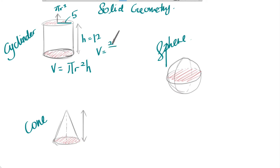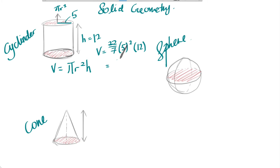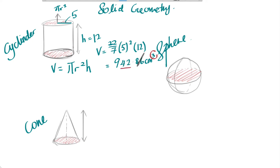Pi is usually given as 22 over 7, then r is 5 squared, and h is 12. Calculate it with your calculator and you'll get 942.86 cm³. Remember to put the cube unit — it is very important, or else they will not accept your answer in the papers.